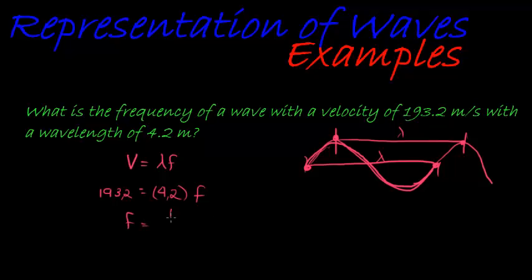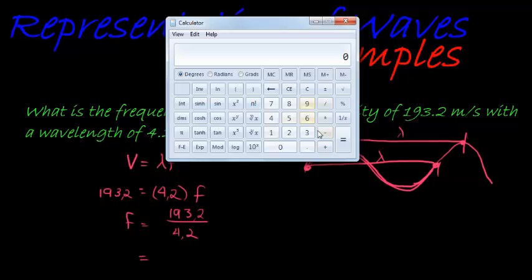So frequency is simply 193.2 divided by 4.2. We get 193.2 divided by 4.2 and we get 46. Beautiful answer.